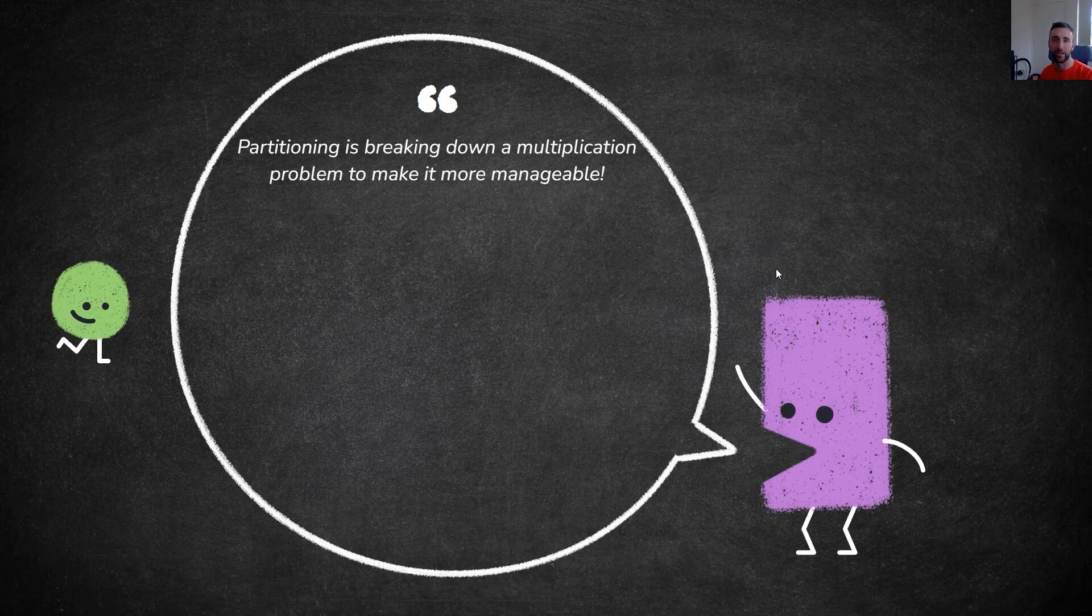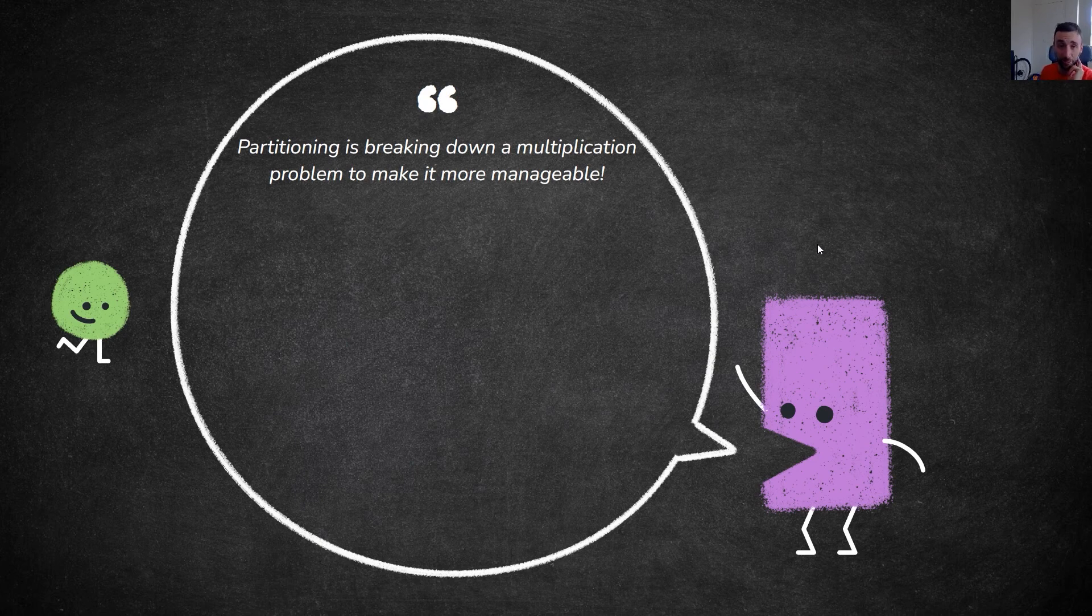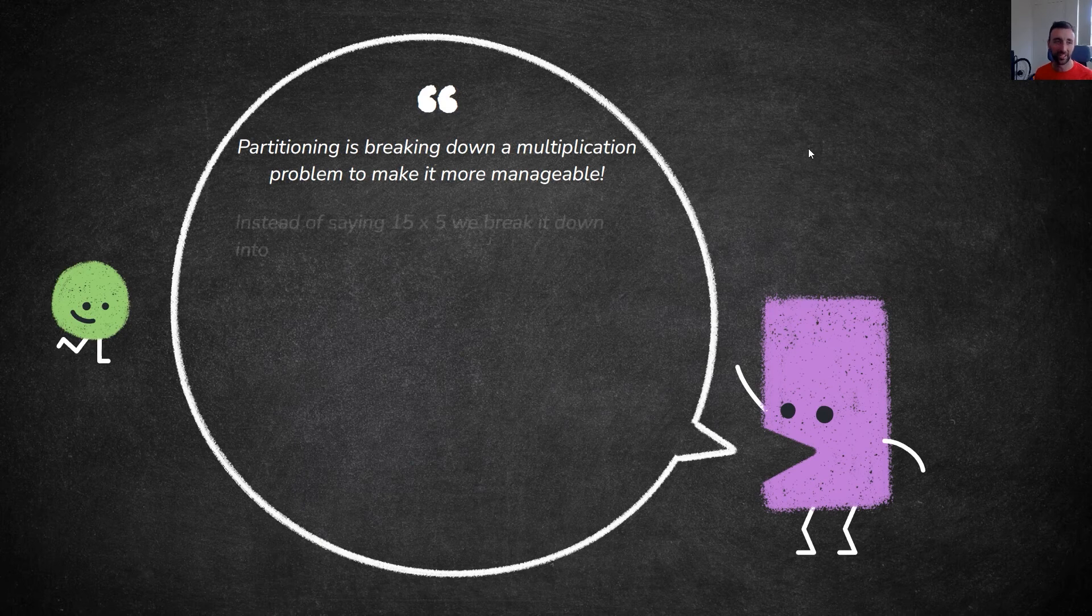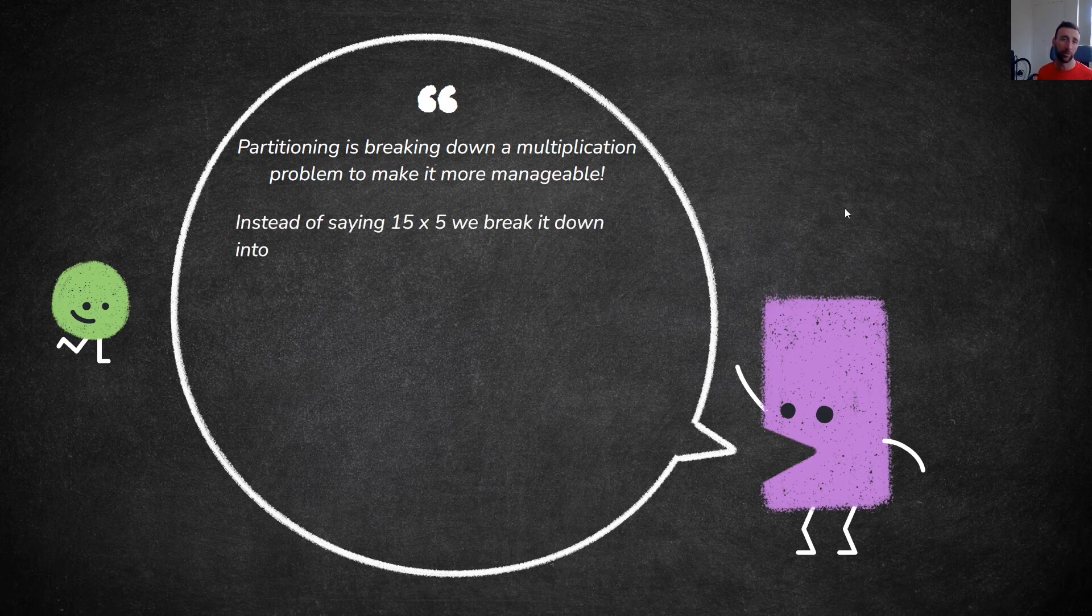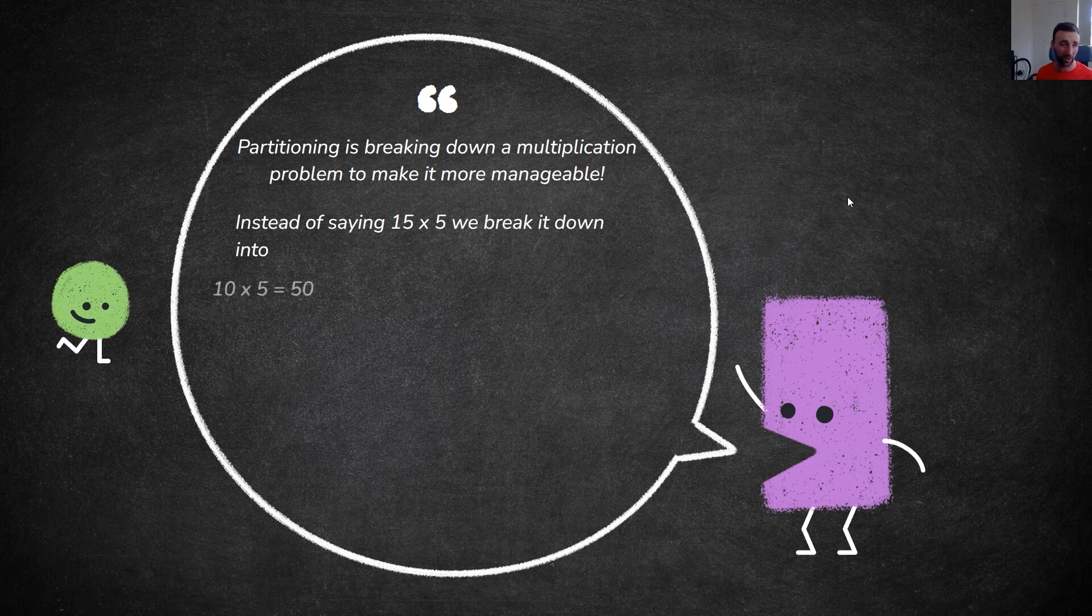Partitioning is breaking down numbers, making multiplication problems easier to calculate. For example, 15 multiplied by 5 can be broken down into 10 by 5 which is 50, and then 5 times 5 which is 25.